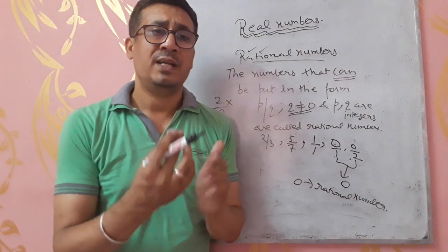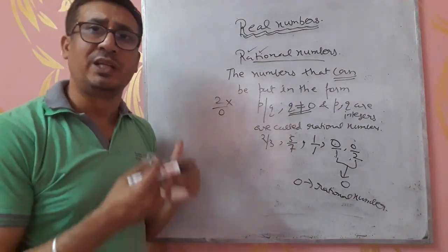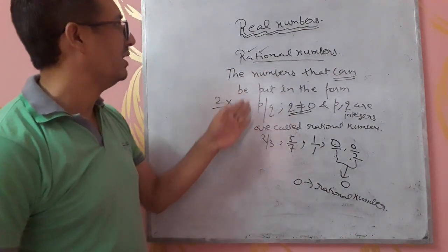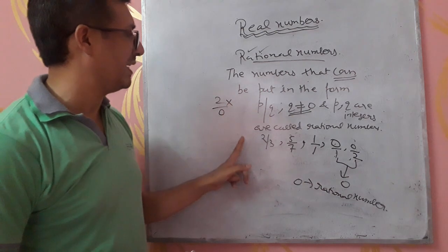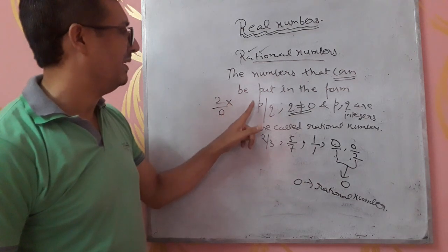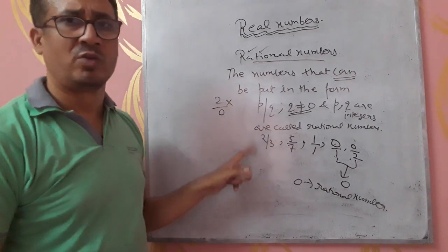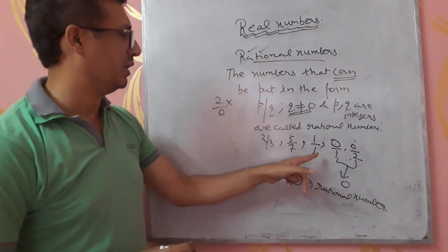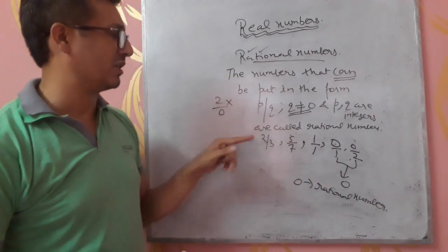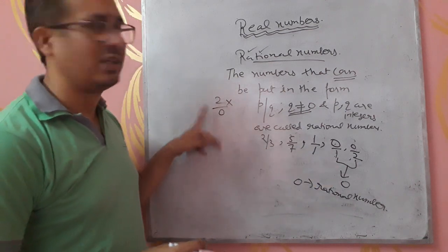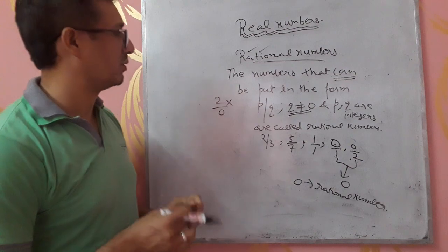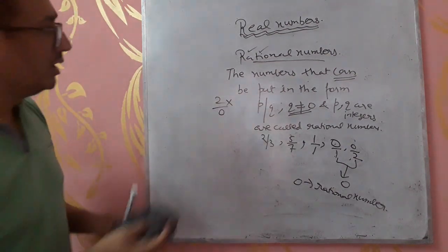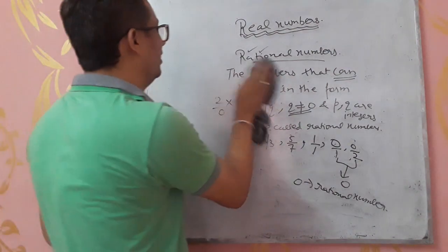So this means any number that is in P by Q form is a rational number. The condition is that both P and Q must be integers, and the denominator Q must not be 0, because division by 0 is not possible. Now we have to know about irrational numbers.